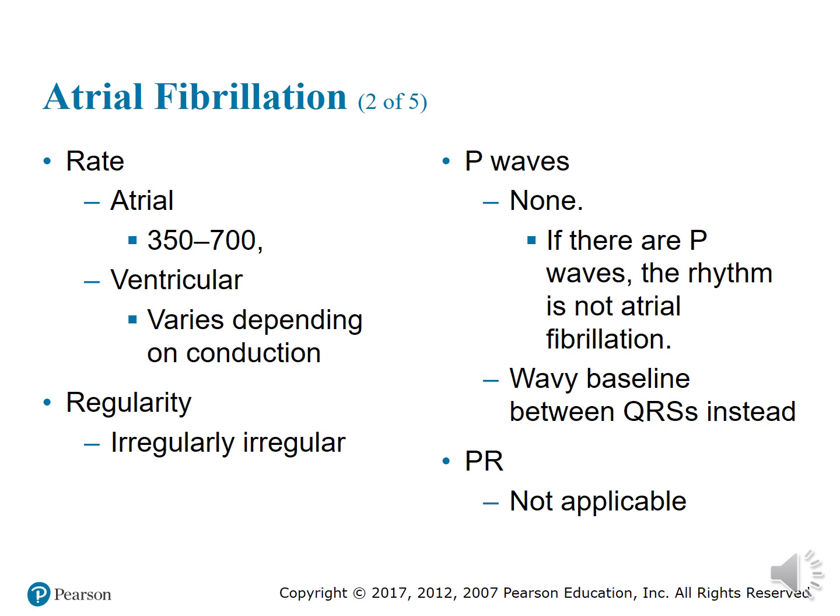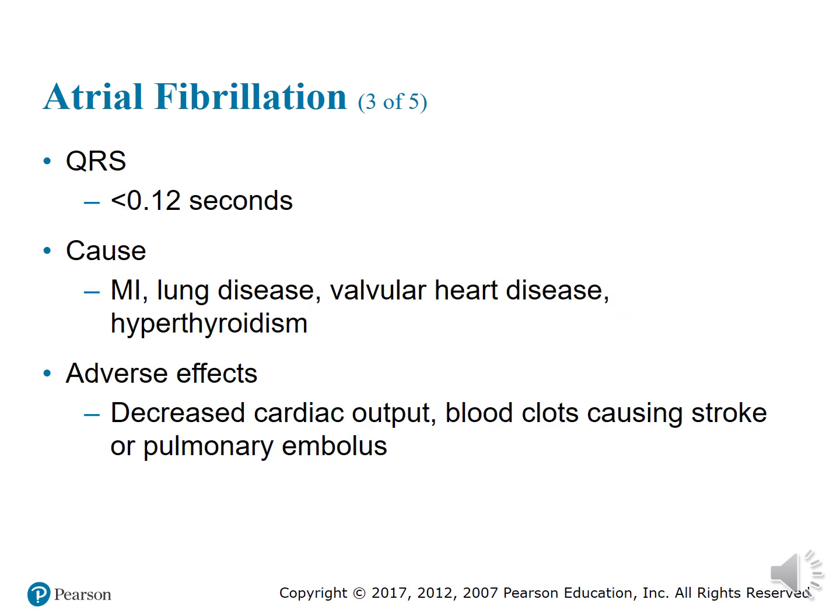Criteria for atrial fibrillation: your atrial rate, with all these quivers but no defined P wave, can be anywhere from 350 to 700 beats per minute. Your ventricular rate depends on how many impulses the AV node lets through. Regularity is regularly irregular — meaning it's so irregular that it's always irregular. There are no P waves — just a wavy baseline between your QRS complexes. Your QRS, when one does form, should be less than or equal to 0.12 seconds.